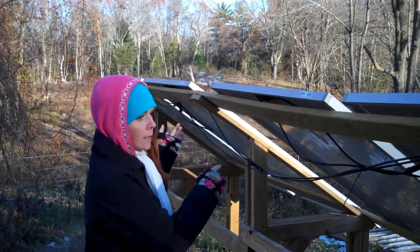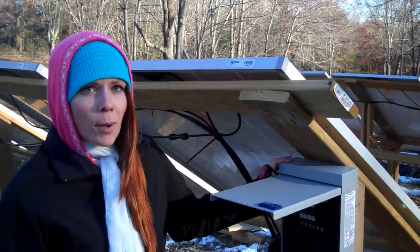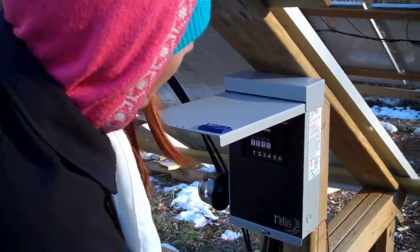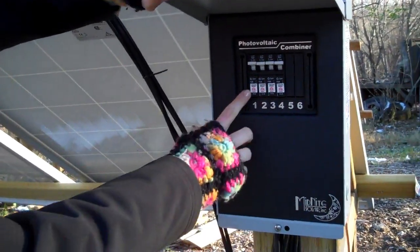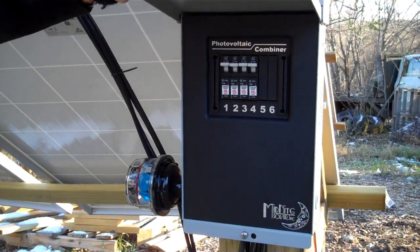So we ultimately end up with 4 positives and 4 negatives leading back to our combiner box here. And this is a Midnight Solar PV4 combiner box. And you can see that we have 4 different breakers, and each of those breakers is controlling one pair of panels.